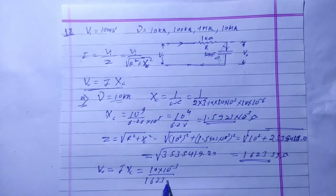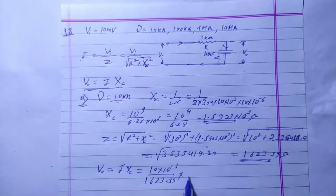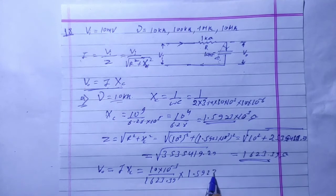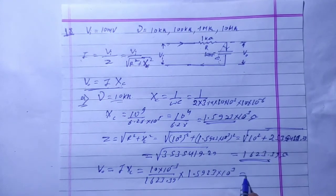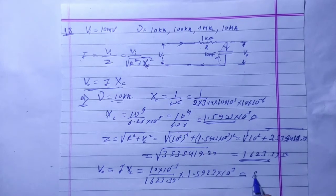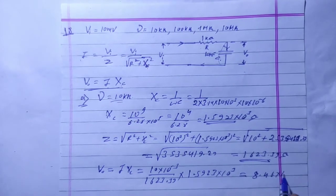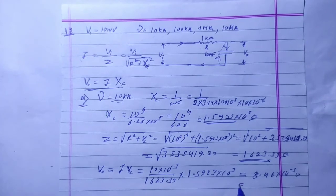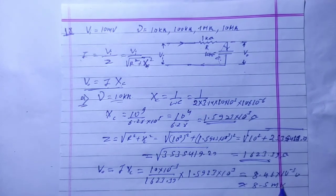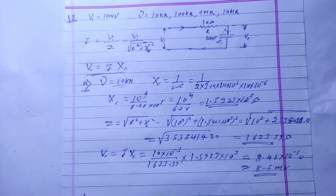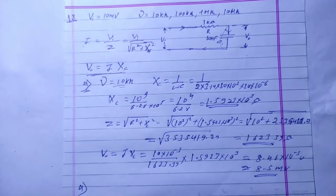Z is approximately 1879.2 and XC is 1.5923 into 10 to the power 3. Solving for output potential I into XC gives 8.46 into 10 to the power minus 3 volt, which is approximately 8.5 millivolt. That is the output for the first frequency, 10 kHz.